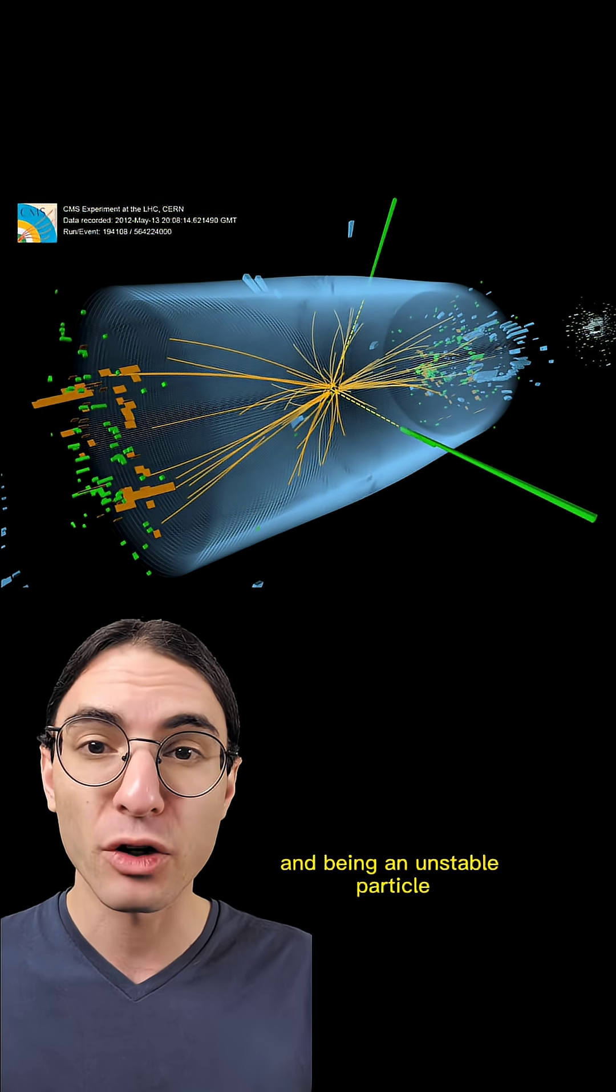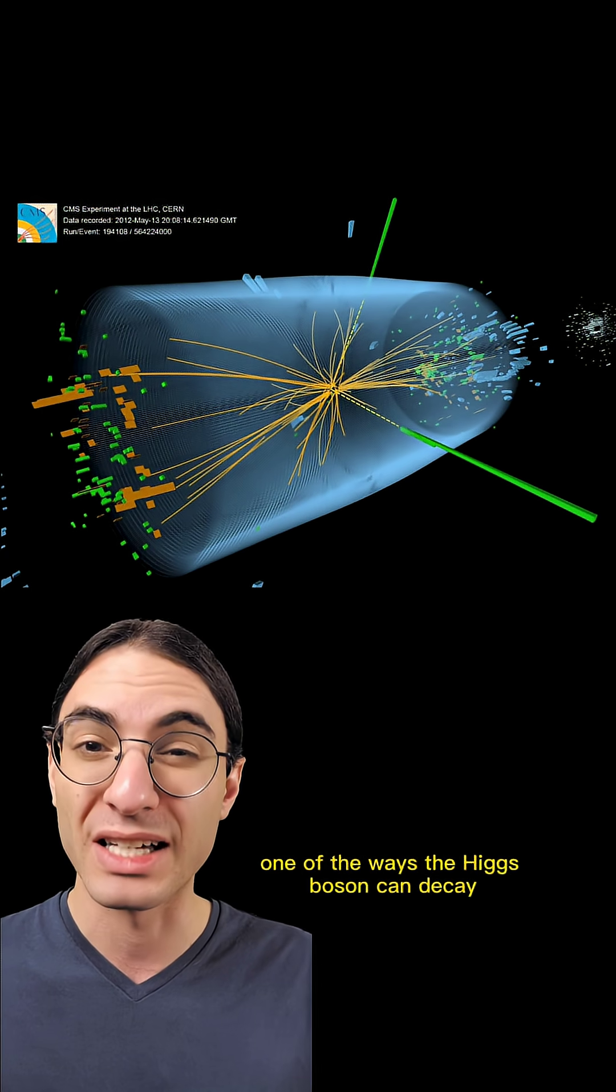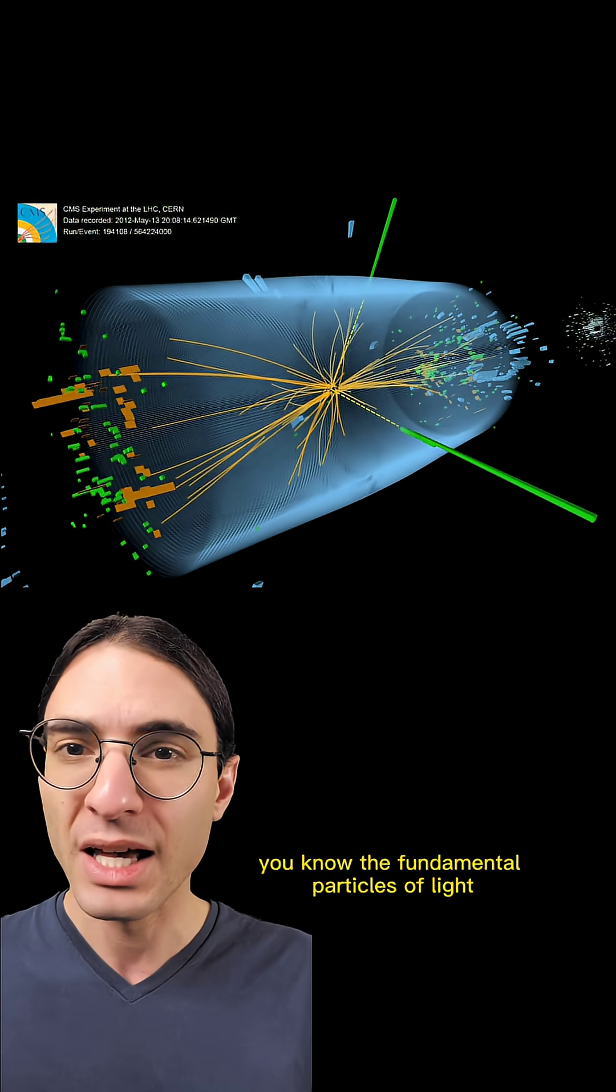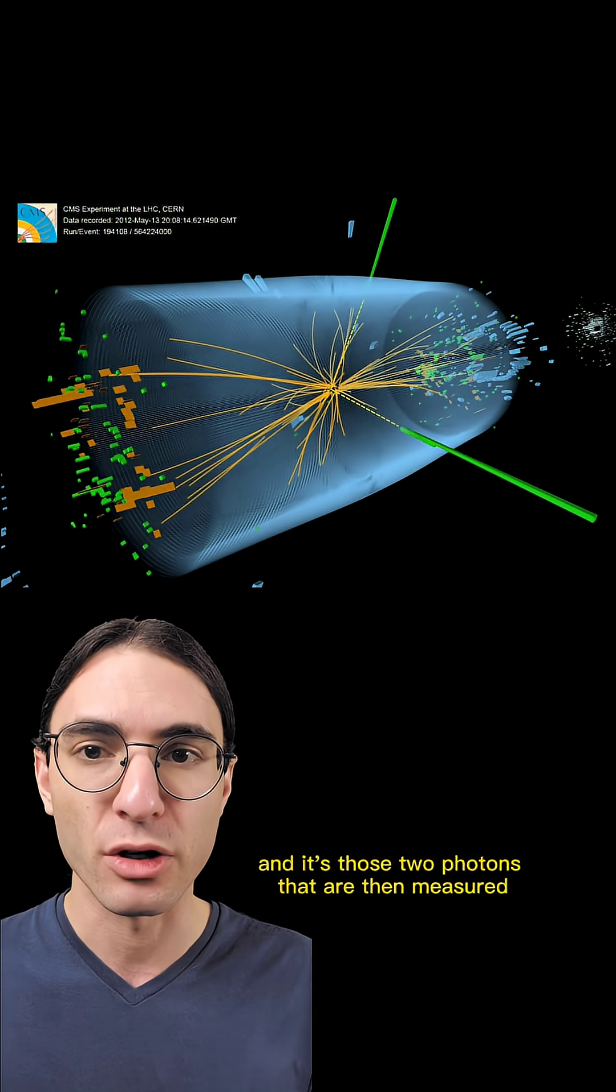And being an unstable particle, one of the ways the Higgs boson can decay is through a process eventually ending in two photons, you know, the fundamental particles of light. And it's those two photons that are then measured.